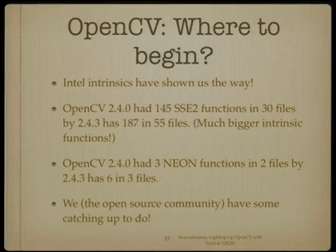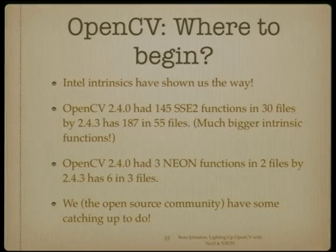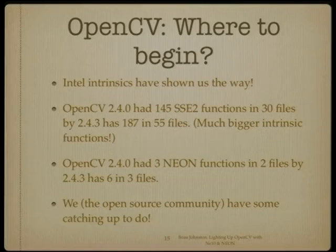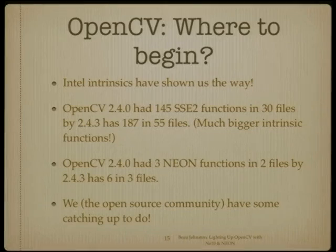In terms of OpenCV and Intel intrinsics, a lot of SSE intrinsics have already been added. OpenCV 2.4.0 had 145 SSE2 functions in 30 files. By the latest release, 2.4.3, it now has 187 functions in 55 source files. Looking at NEON, OpenCV 2.4.0 had only three Neon functions in two files, and the latest version has six over three. Clearly, the open source community has some catching up to do if we want to improve this library for ARM-based devices.